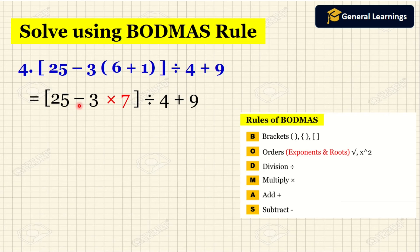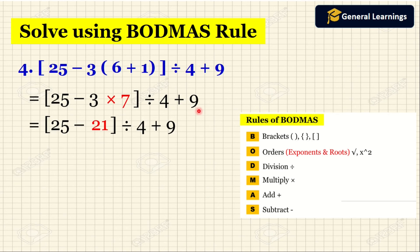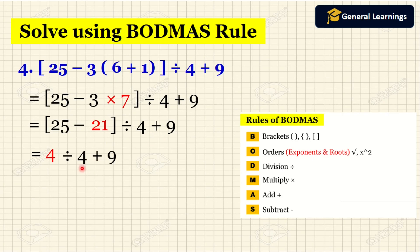Now inside the outer bracket they have given two operations: subtraction and multiplication. First we do multiplication: 3 into 7 equals 21. We write the remaining as it is. Inside the bracket we now have 25 minus 21, which equals 4. Then we divide by 4 plus 9.